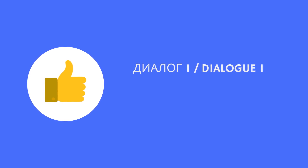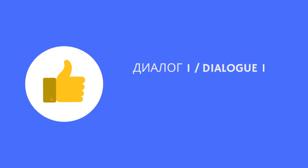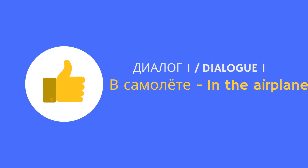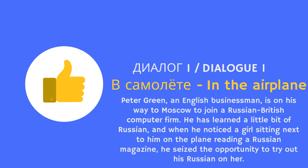Диалог 1. В самолёте. Peter Green, an English businessman, is on his way to Moscow to join a Russian-British computer firm. He has learned a little bit of Russian, and when he noticed a girl sitting next to him on the plane reading a Russian magazine, he sees the opportunity to try out his Russian on her.